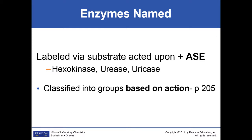Enzymes are named after the substrate or the element they're acting upon, and they all end in '-ase' (A-S-E). We just did in lab the hexokinase reaction — we were measuring the glucose, or hexose. We added an enzyme to cause the reaction; the substrate was the glucose. We can also do urease where we are measuring the urea, or uricase where we're measuring uric acid. We use this principle sometimes to measure the enzymes we're making, or sometimes to measure the substrate.